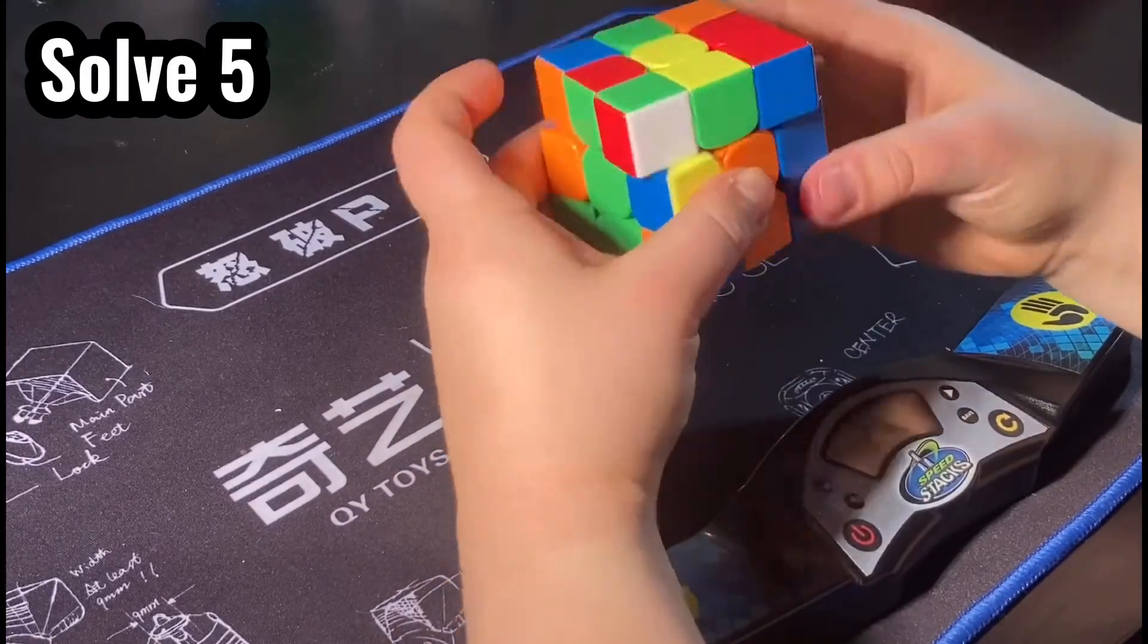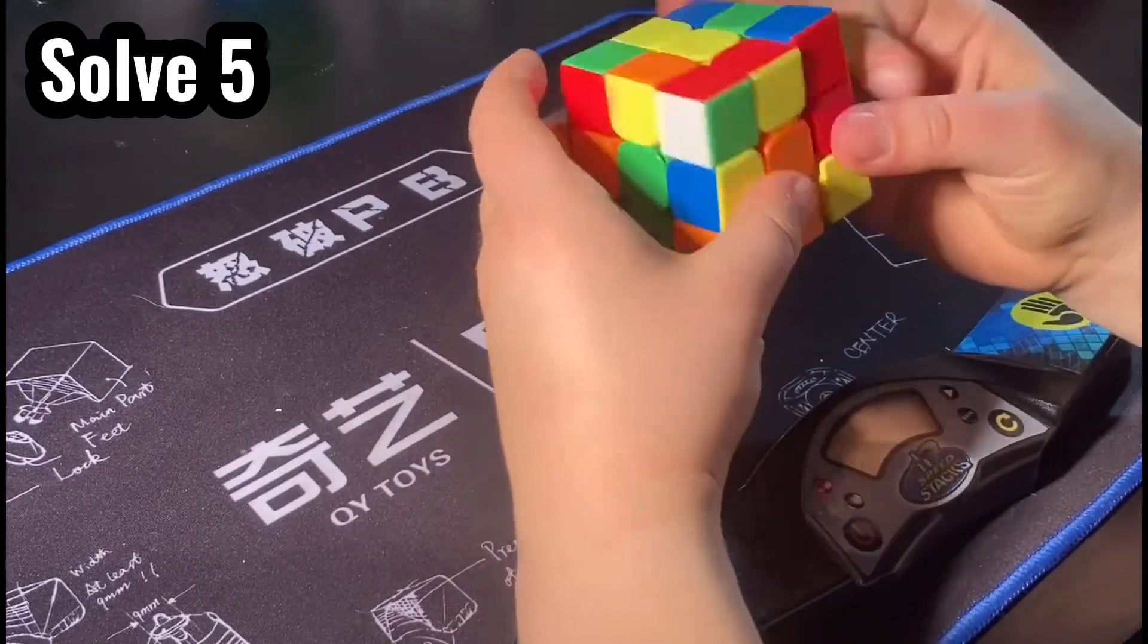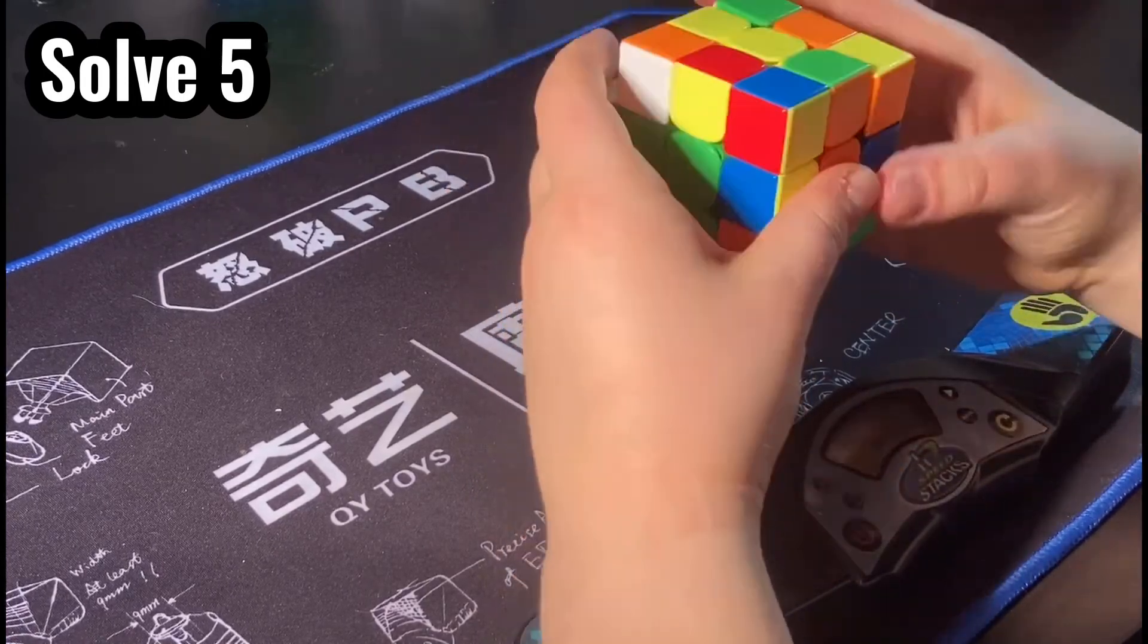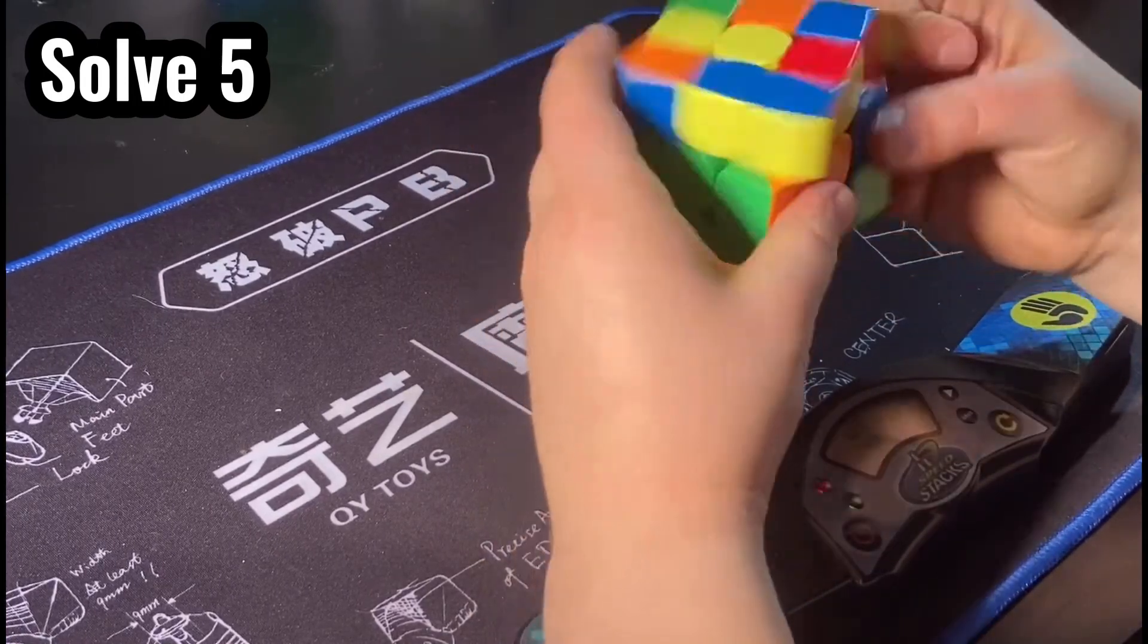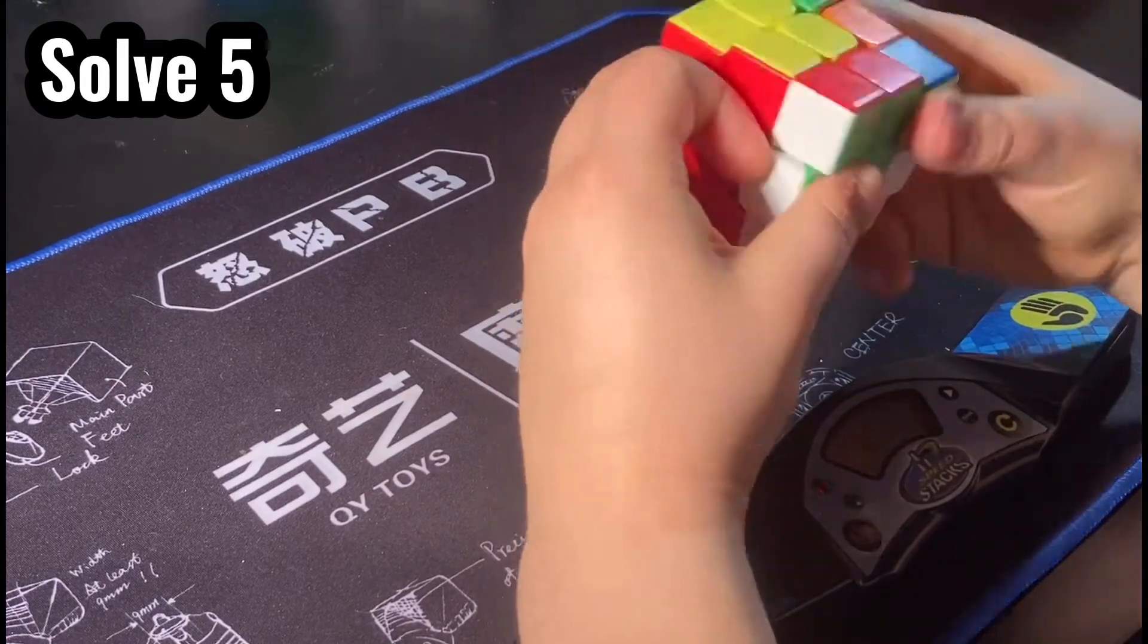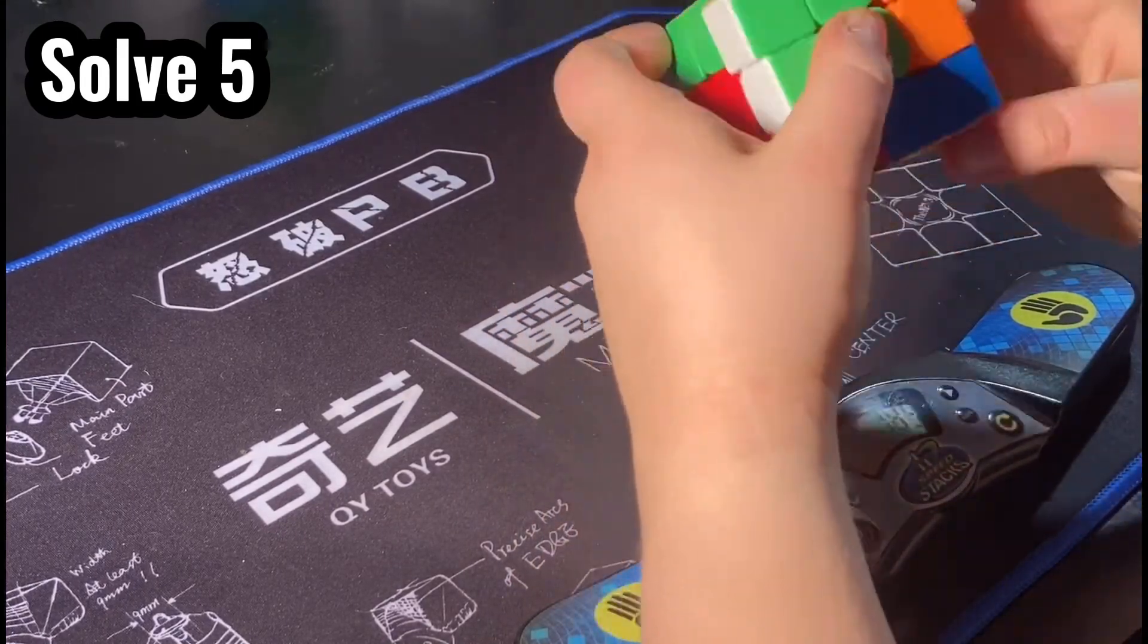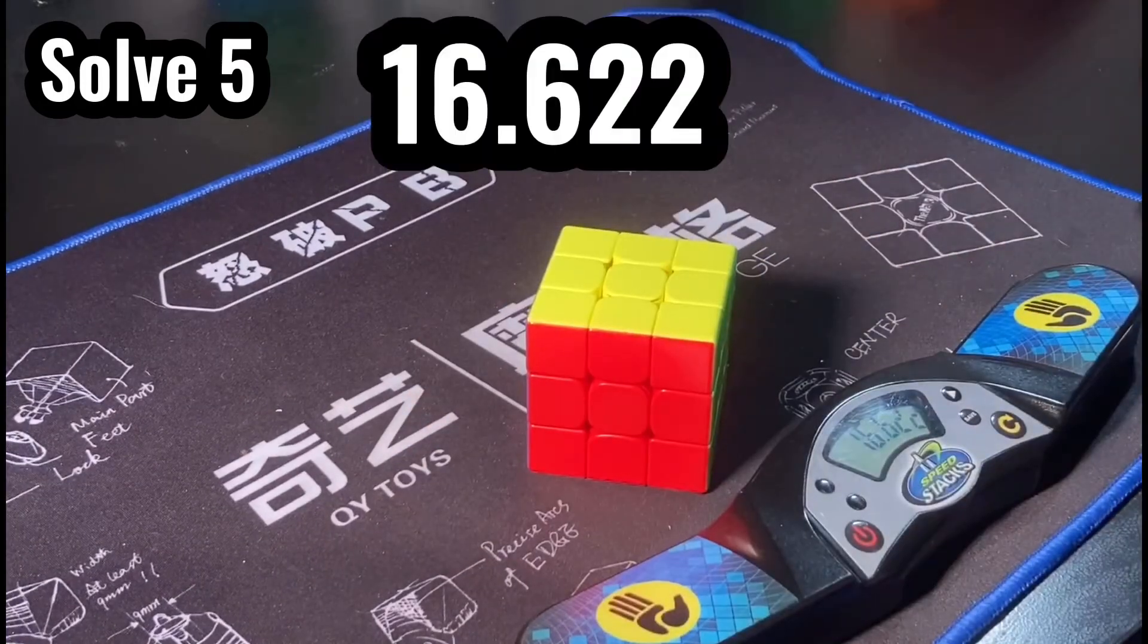Okay, so I start my fifth solve. This is the last one. And my cross is, again, very good. Now on to F2L. The F2L is okay, not the best, unfortunately, though. Now on to OLL, doing two look OLL again. And then we have an R perm for a total of 16.622.